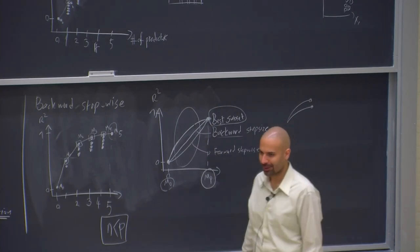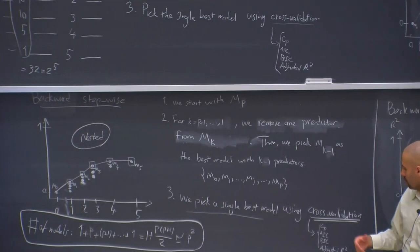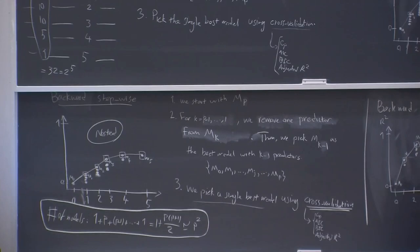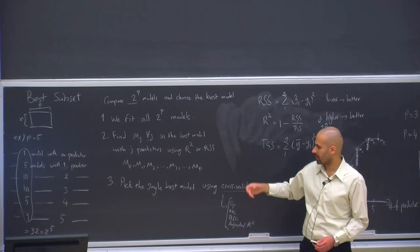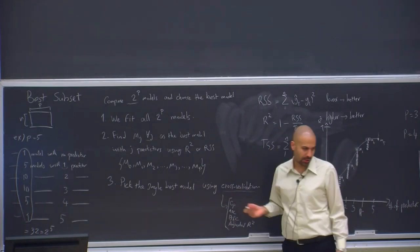One other thing about step three. So for step three of all these three methods, we usually use cross-validation. And let me just give you an example of what cross-validation would show us. So regardless of whether we're doing best subset or forward stepwise or backward stepwise, we're going to end up with a list of models at the end of step two. And we want to compare them using cross-validation in step three.